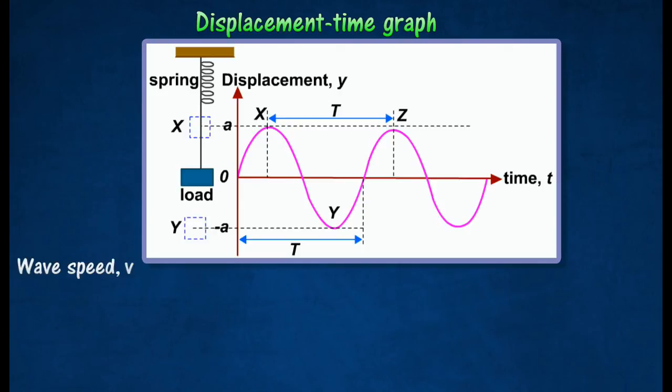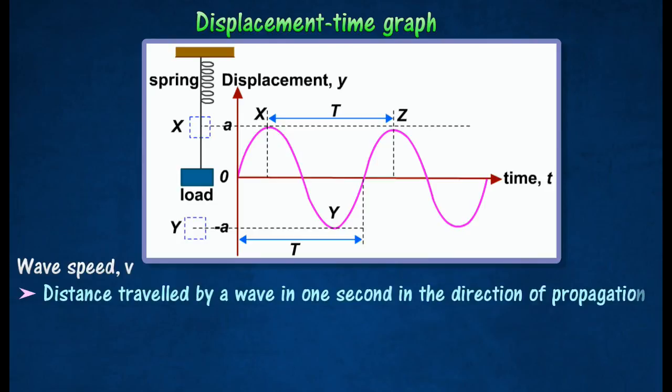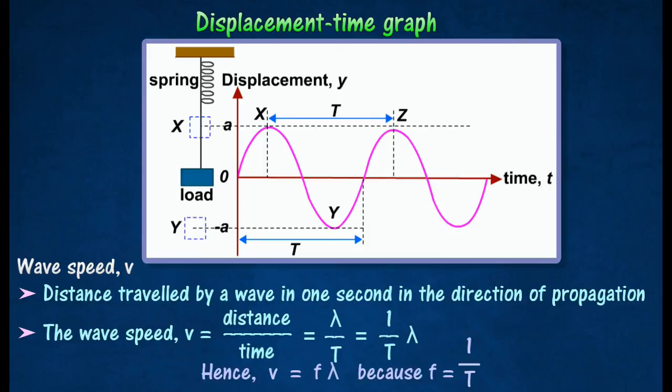Wave speed V is the distance traveled by a wave in one second in the direction of propagation. During a time of one period T, the crest of a wave travels through a distance of one wavelength.